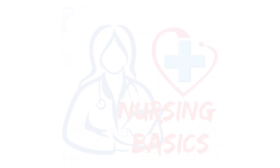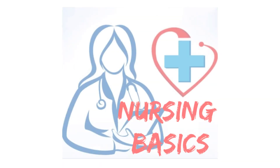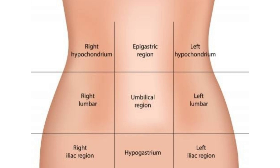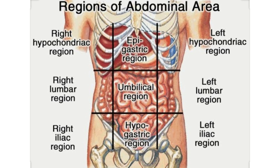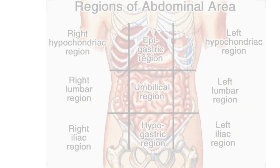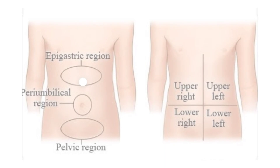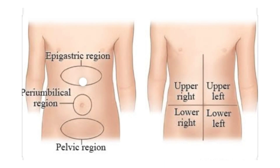Hello friends, welcome to Nursing Basics. Today we are studying about quadrants of the abdomen. The human abdomen is divided into quadrants and regions by anatomists and physicians for the purpose of study, diagnosis, and treatment. The division of four quadrants allows the localization of pain, tenderness, scars, lumps, and other items of interest.